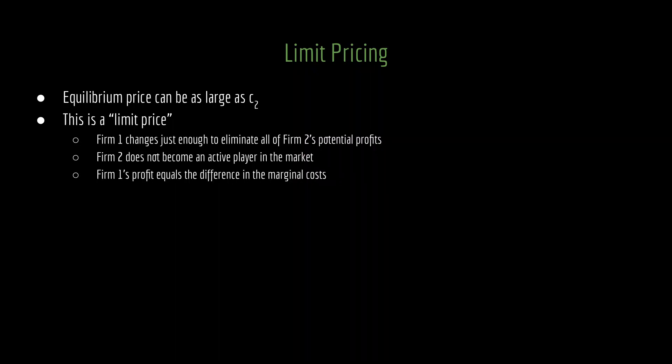If those differences are very small, then firm 1 will not get much of a profit. But it is possible for firm 1 to get quite a bit of profit if you think of the marginal cost of firm 1 as being a very small amount and the marginal cost of firm 2 as being a very large amount. Again, that's in contrast with what we observe with symmetric Bertrand competition, where there are no profits whatsoever for the firms.